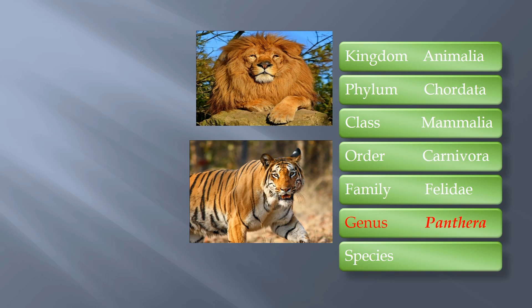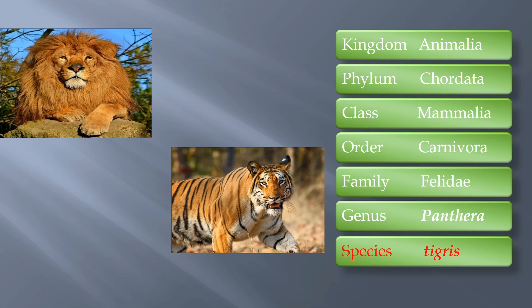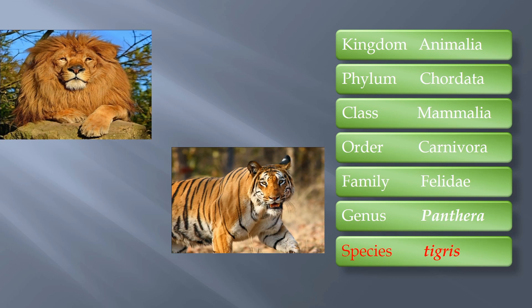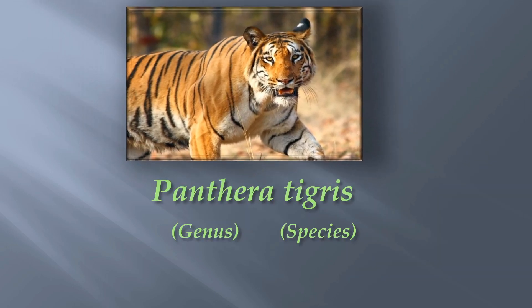The next level of category is species tigris. Lion does not belong to this species category, so lion will be eliminated. Hence, the scientific name of tiger is Panthera tigris, where Panthera is the genus and tigris is the species.